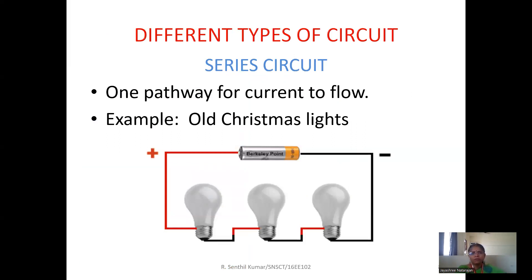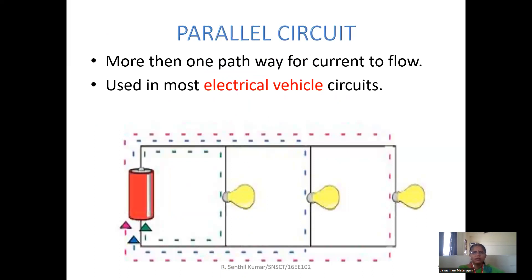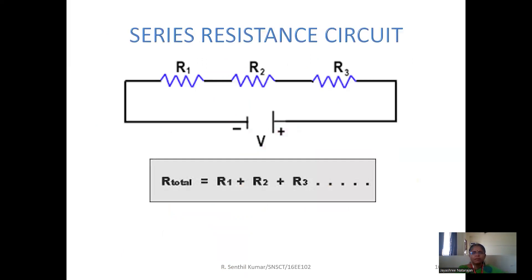There are two types of circuit I already told. Series circuit example is serial lights - Christmas lamps serial lights are in series circuit. Parallel circuit is mostly used in electrical vehicles. So how to calculate resistors if it is connected in series? Total resistance or equivalent resistance equals sum of all resistances. R total equals R1 plus R2 plus R3. If n number of resistances are connected in series, we can directly add and calculate the equivalent resistance.